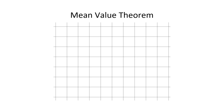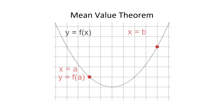Before we get into our main topic, we need a brief review of the mean value theorem. You probably saw this in Calculus 1, although you may not remember it very well. We start with the graph of a function, y equals f. We select two points on the function, x equals a and x equals b, and draw a straight line through those two points of the curve.